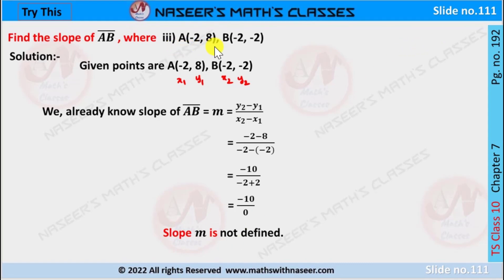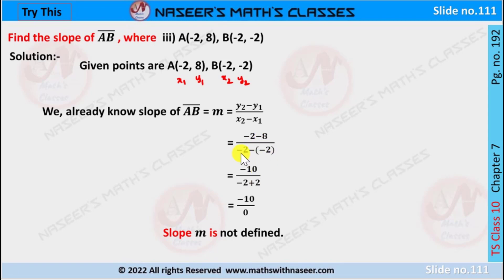Third part: A is (-2, 8) and B is (-2, -2). Then x1 = -2, y1 = 8, x2 = -2, y2 = -2. The slope of AB is M = (y2 - y1) / (x2 - x1). Substituting: (-2 - 8) / (-2 - (-2)) = -10 / (-2 + 2) = -10 / 0. This is not defined because division by 0 is not possible. Therefore slope M is not defined.